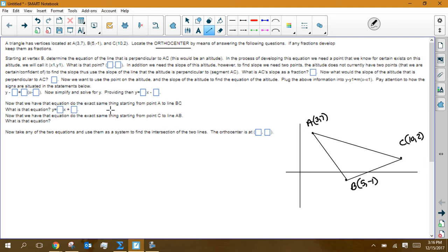On the test, I may not use the verbiage that elicits an altitude. You're going to have to know that an orthocenter is the intersection of altitudes. But what it says is, if you start at point B, determine the equation of the line that is perpendicular to AC. So now starting at B, I'm looking for the line that is perpendicular over here to AC.